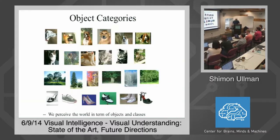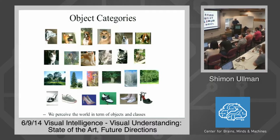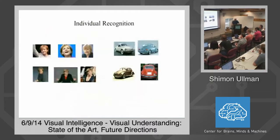The big problem here is, of course, the variability. You look at the class of dogs — there are so many dogs from so many different directions that knowing this is an image of a dog is very difficult in the face of this large variability. A related problem is not just to classify an object, but to recognize an individual object across variations in appearance — that all these are the same person, all these are the same type of car, and so on.